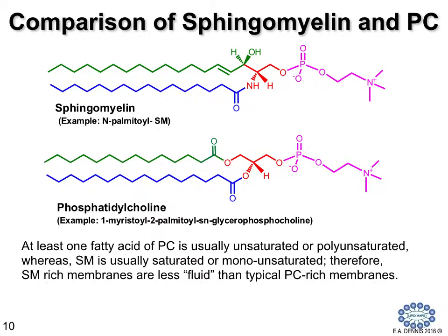Phosphatidylcholine generally contains a saturated fatty acid on the one position, whereas sphingomyelin contains an essentially saturated fatty acid, but with a single double bond adjacent to the hydroxy group, as shown on the top. The second fatty acyl group added on phospholipids as an ester can similarly be added on the amide group of sphingomyelin, and the phosphorylcholine are the same. However, overall, sphingomyelin has fewer double bonds than phosphatidylcholines, and gives rise to a less soluble or less fluid membrane component.